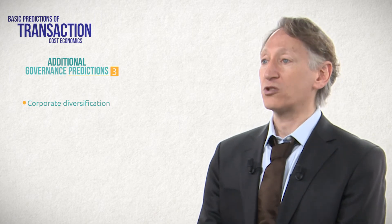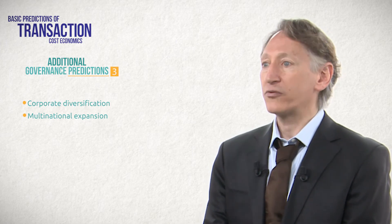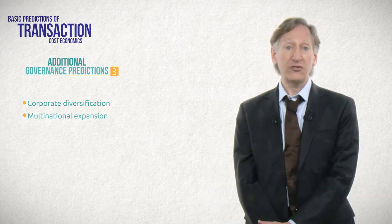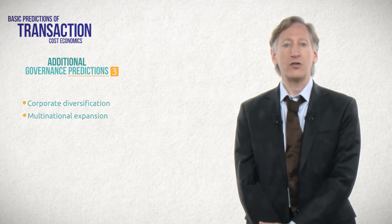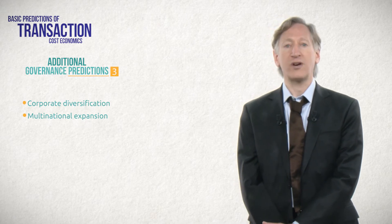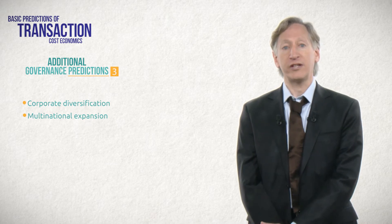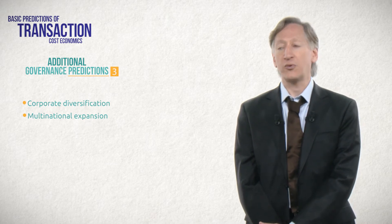Scholars also proposed a similar approach to understanding multinational expansion. A French firm can sell its cheese in the U.S. by exporting to an independent company in the U.S., or it can set up its own U.S. subsidiary. How will the firm choose? Based on transaction cost reasoning, the prediction is clear: the French firm should prefer to export as long as the required asset specificity or the risk of knowledge expropriation is low. But as asset specificity or appropriability concerns increase, it will reach a point after which it should prefer to build a subsidiary in the U.S., essentially integrating this activity.